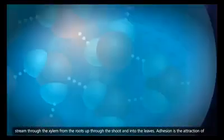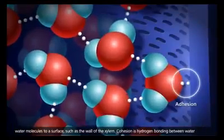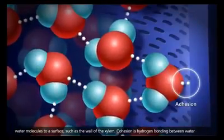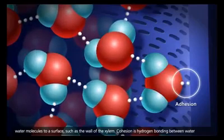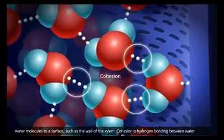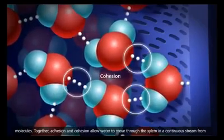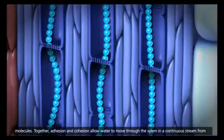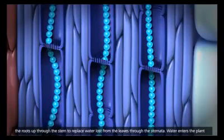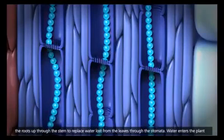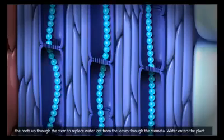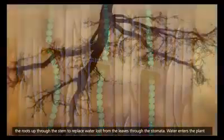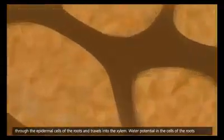Adhesion is the attraction of water molecules to a surface, such as the wall of the xylem. Cohesion is hydrogen bonding between water molecules. Together, adhesion and cohesion allow water to move through the xylem in a continuous stream, from the roots, up through the stem, to replace water lost from the leaves through the stomata.